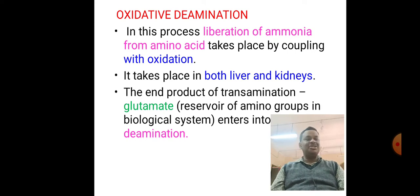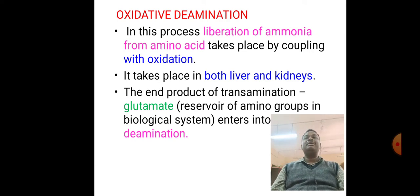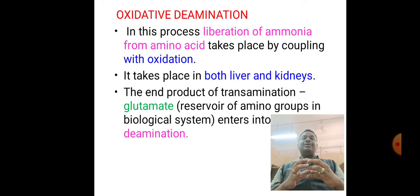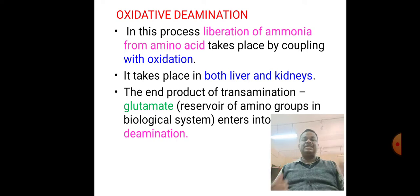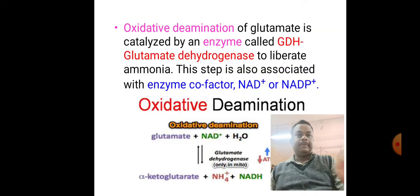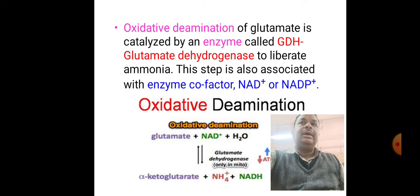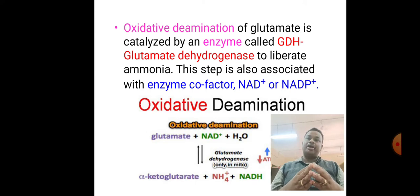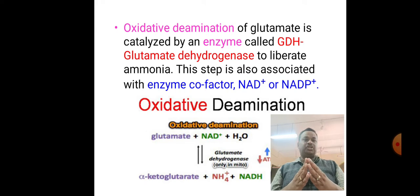The very purpose of deamination is removal of ammonia, which is a toxic substance. If the liberation of ammonia from an amino acid is coupled with the process of oxidation, we call it oxidative deamination. The major sites of these reactions are the liver and kidneys. In oxidative deamination, glutamate formed from transamination enters the oxidative deamination process, where its amino group is removed. This process is catalyzed by the enzyme glutamate dehydrogenase, also called glutamate oxidase, or GDH for short.